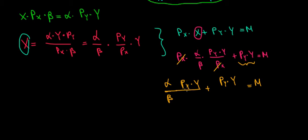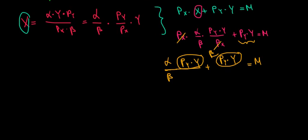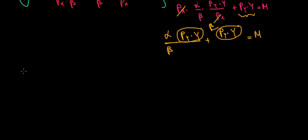We can see price of y times y on both sides. Our intuition is to take it as a common factor, but we can't yet because we don't have the same denominator. So let's multiply the second term by beta to make a common denominator. We would have alpha times price of y times y plus beta times price of y times y, all divided by beta, equals m.